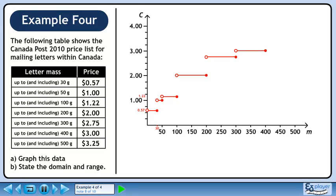Letters between 300 and 400 grams cost $3 to mail. Finally, letters between 400 and 500 grams cost $3.25 to mail.